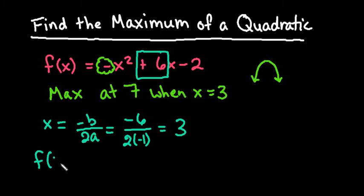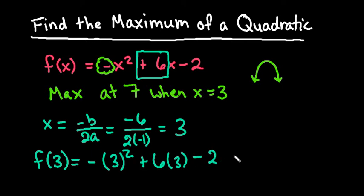And then remember to find the highest point, we just find f of 3. So that would give me negative 3 squared plus 6 times 3 minus 2. So you have to be careful here with this. Remember that you are not squaring the negative. So this would be negative 9 plus 18, which is 9. 9 minus 2 is 7.